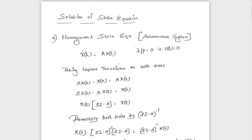First we are going to consider the homogeneous state equation, or an autonomous system. The homogeneous state equation means a system with input equal to zero — that is u(t) = 0. Therefore, the state equation becomes x-dot(t) = A·x(t).